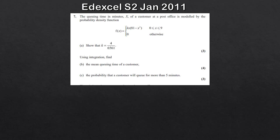What we need to consider is that if we integrate the PDF over its full domain, the total area equals 1. So we write the integral of f(x) with respect to x equals 1 over the given domain, which is 0 to 9. All we need to do is integrate the given PDF.